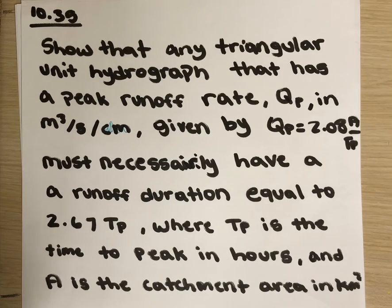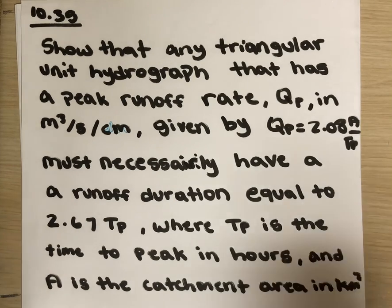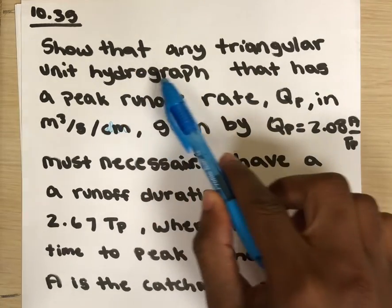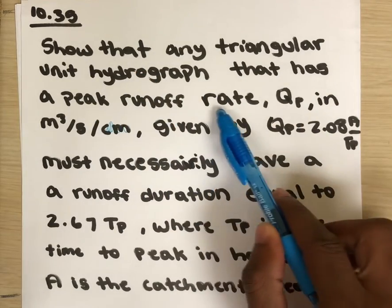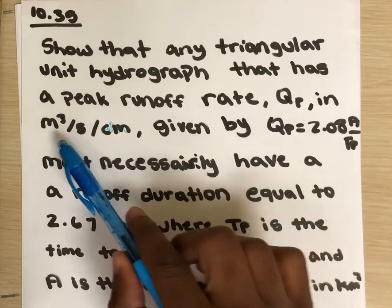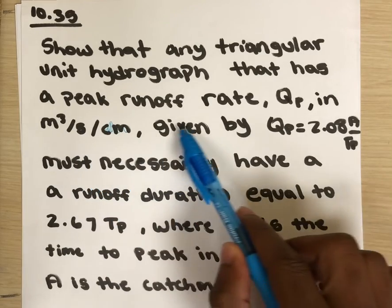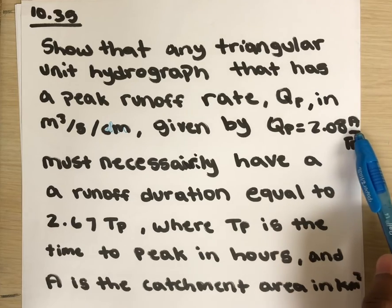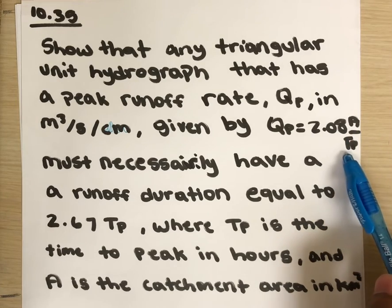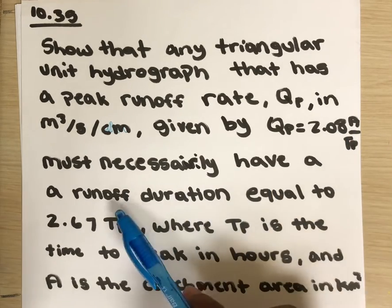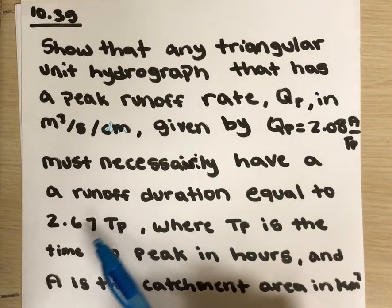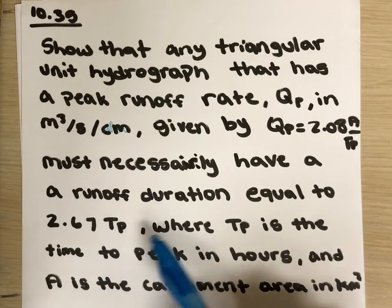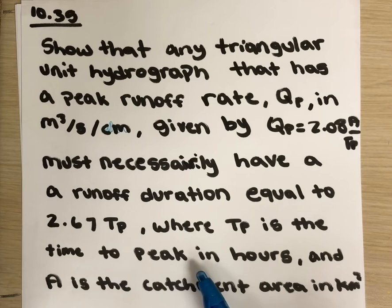Looking at the problem, it asks us to show a proof that any triangular unit hydrograph that has a peak runoff rate, qp, in meters cubed per second, which is given by qp equal 2.08 times A divided by tp must necessarily have a runoff duration equal to 2.67 tp.